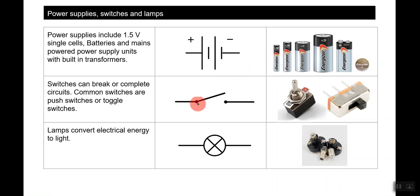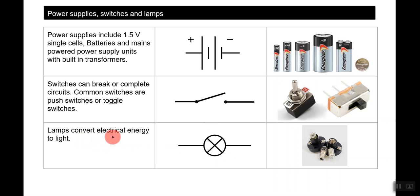Switches can break or complete circuits. Common switches are push switches or toggle switches. Lamps convert electrical energy to light energy — electrons flow through a resistant material, it gets really hot, glows, and gives off light energy.